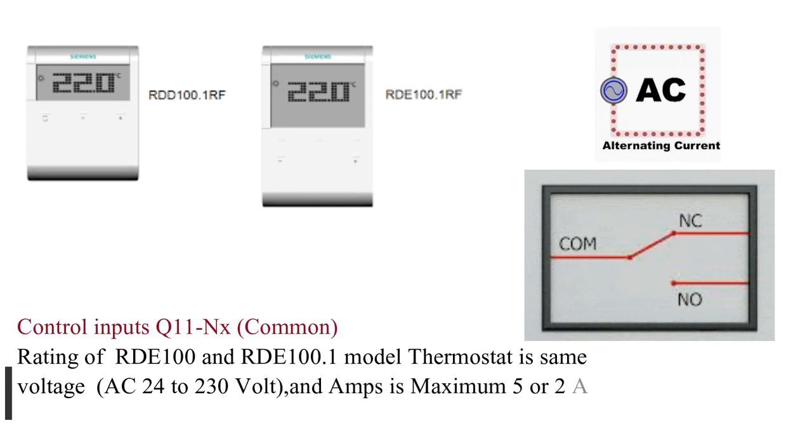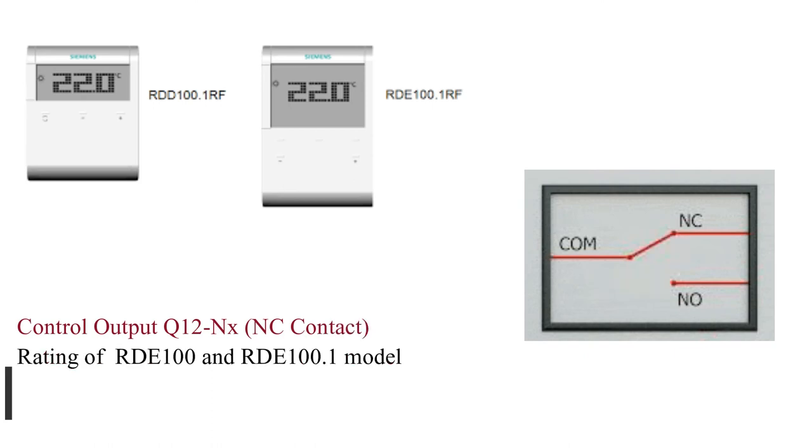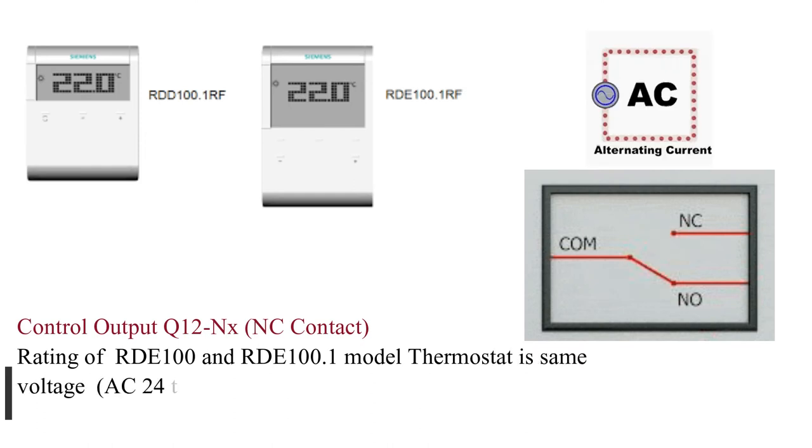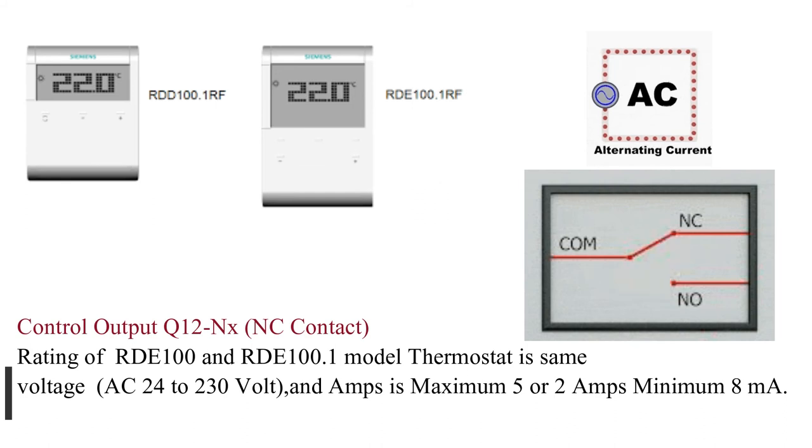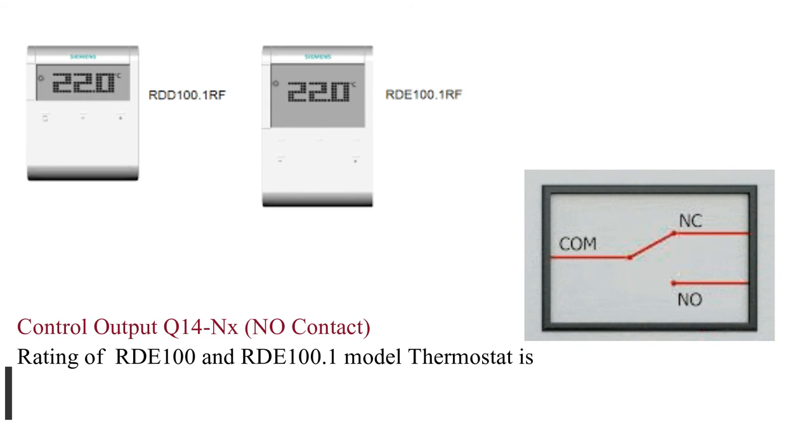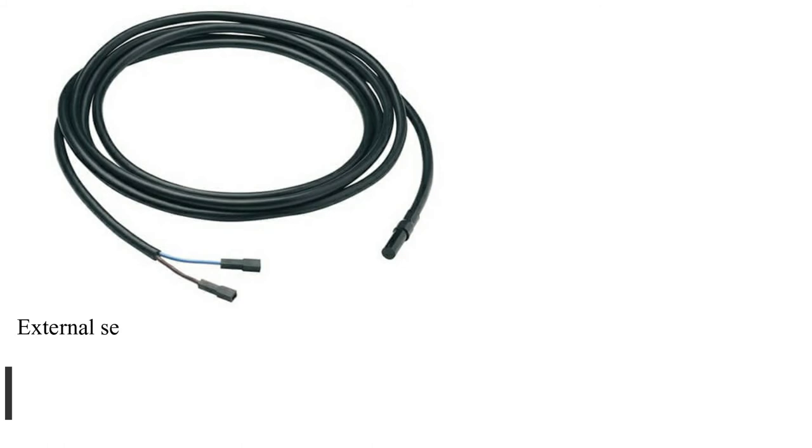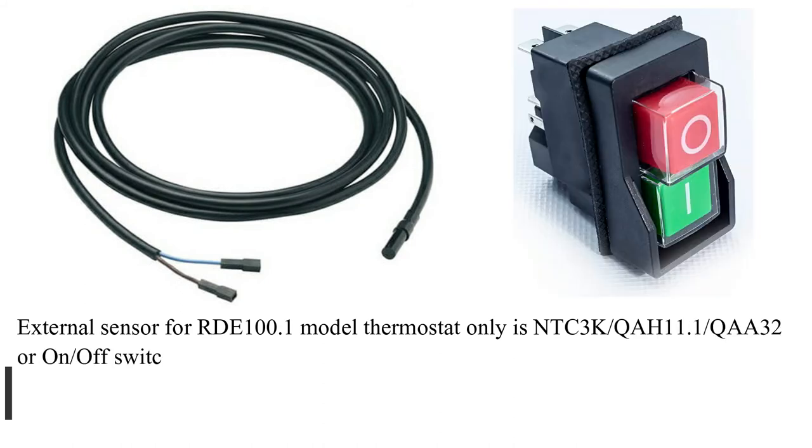Control output Q12NX NC contact: Rating of RDE100 and RDE100.1 model thermostat is same voltage AC 24 to 230V, and amps is maximum 5 or 2 amps, minimum 8 milliamps. Control output Q14NX NO contact: Rating of RDE100.1 model thermostat is same voltage AC 24 to 230V, and amps is maximum 5 or 2 amps, minimum 8 milliamps. External sensor for RDE100.1 model thermostat only is NTC/CA11 and 1/CA32 or on/off switch.